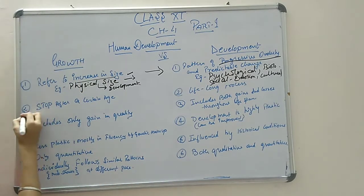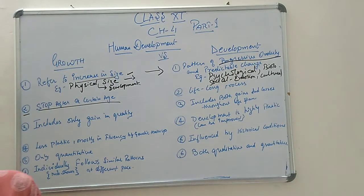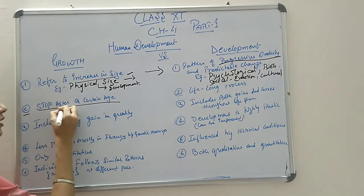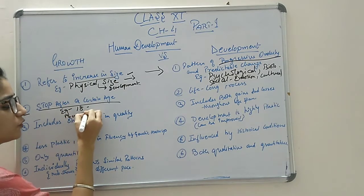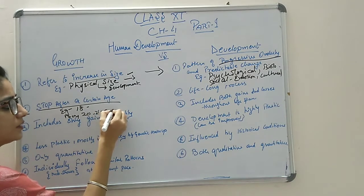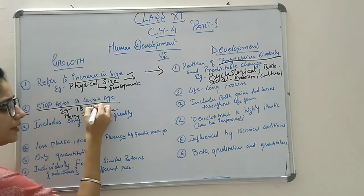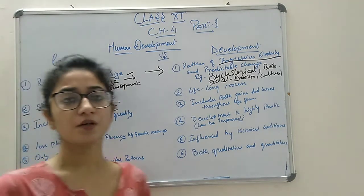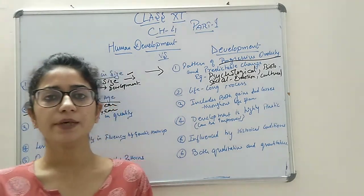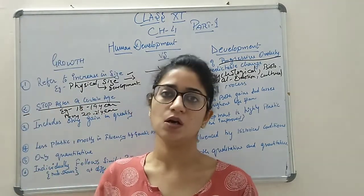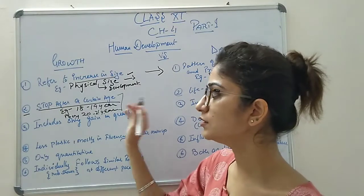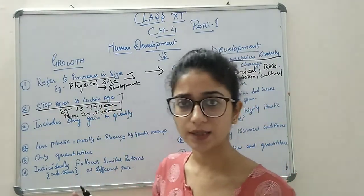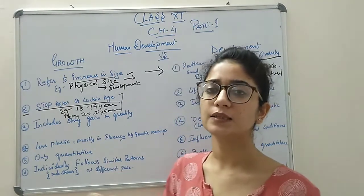The second point about growth is that it stops after a certain age. Growth stops after 18 to 19 years in girls, and after 20 to 21 years in boys. This is the time period where complete body development takes place, and after that, decline begins. So the increasing of size stops at a particular time period, and after that, decline starts in the body.